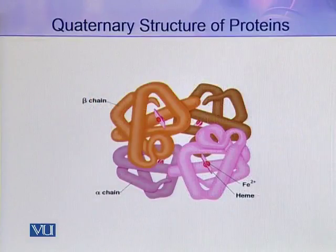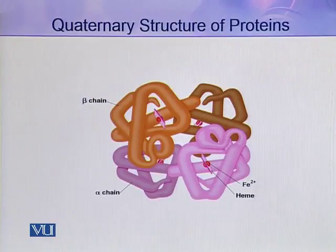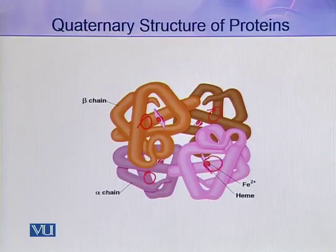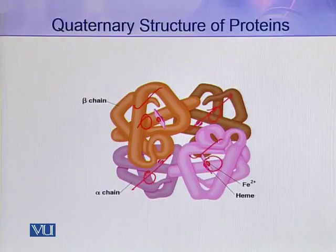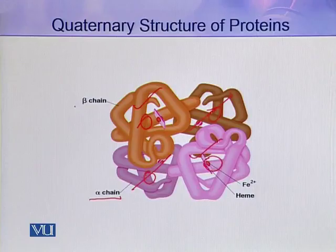As you can see in this diagram, this is the diagram of a hemoglobin molecule, which is a protein. It contains four subunits: 1, 2, 3, 4. Four subunits are present in this molecule. Two of the subunits are identical to each other, and the other two subunits are also identical to each other. So a hemoglobin molecule contains four subunits in which two alpha subunits are similar and two beta subunits are similar. In this way, you can say hemoglobin is a tetramer.